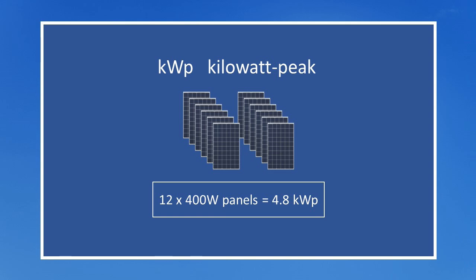Smaller and larger panels, both in size and rating, are of course available. So if we installed 12 solar panels each with a 400 watt peak rating, our solar array would have an overall rating of 4.8 kilowatt peak. Unfortunately, having a rating of 4.8 kilowatt peak does not mean that we'll be generating 4.8 kilowatts of electricity all the time. In fact, at many times of the day and year, it will be a lot less.